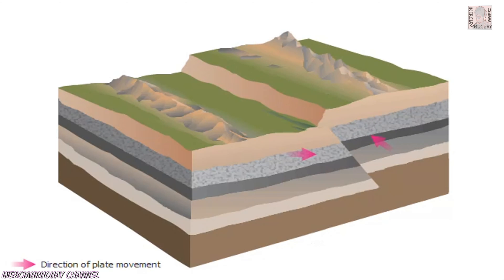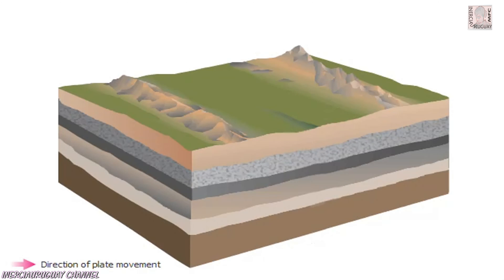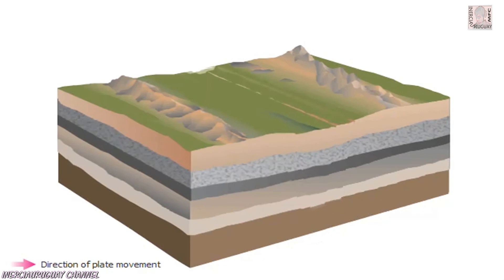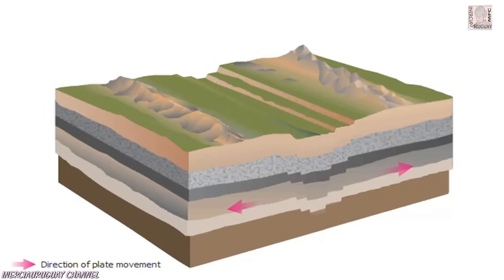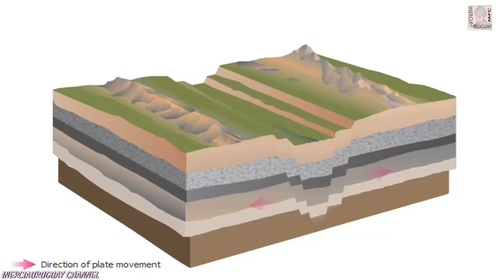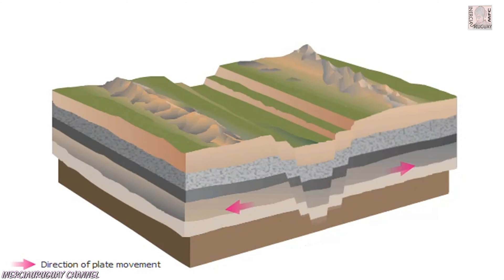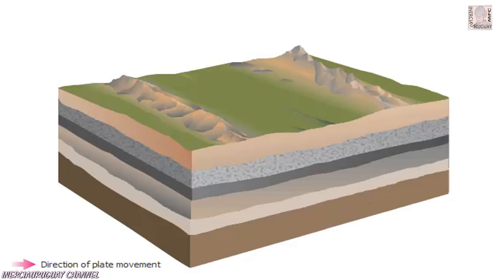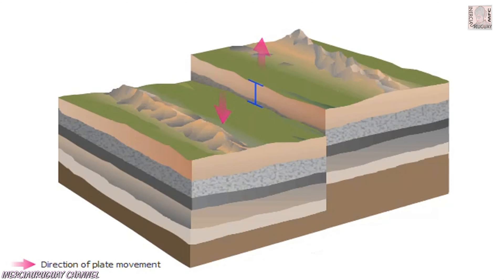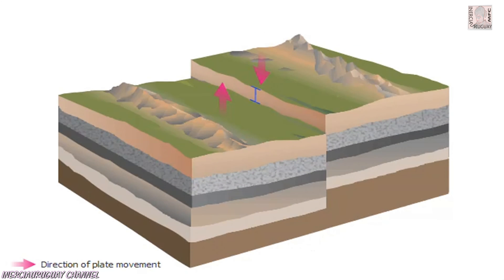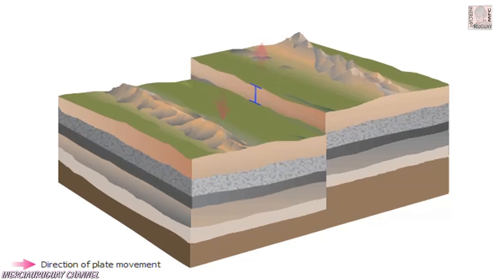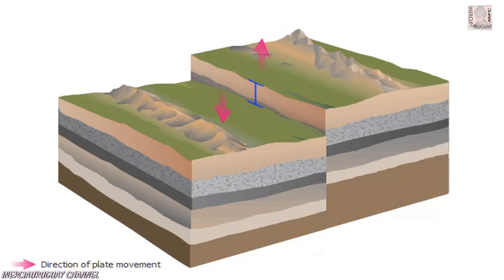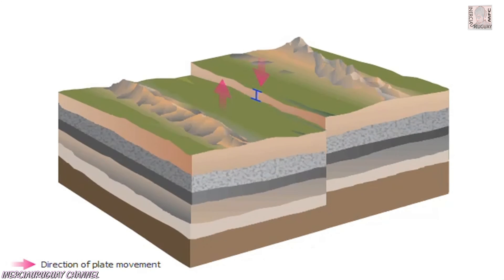Pressing plates produce thrust faults. When plates move away from each other, rocks may be lowered, producing down-dropped faults. The amount of vertical displacement is called the fault's throw. Faults vary in throw from a few meters to hundreds of meters.